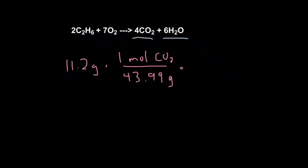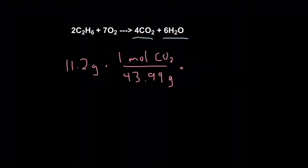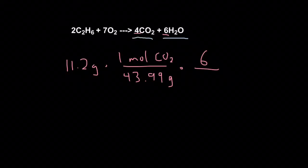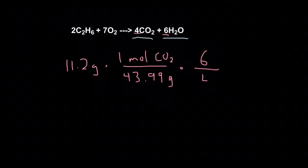Then we're going to multiply that by the mole ratio, which has the moles of want on top and the moles of given on the bottom. Because we have 6 moles of water produced in the reaction, that's our moles wanted value. And we have 4 moles of CO2 produced, that's our moles given value.